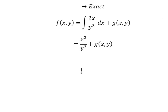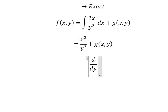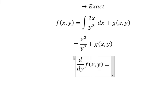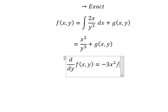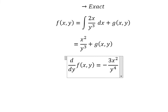So we need to do the first derivative of the function F with respect to y. Taking that derivative, we get negative 3x over y to the power of 4.